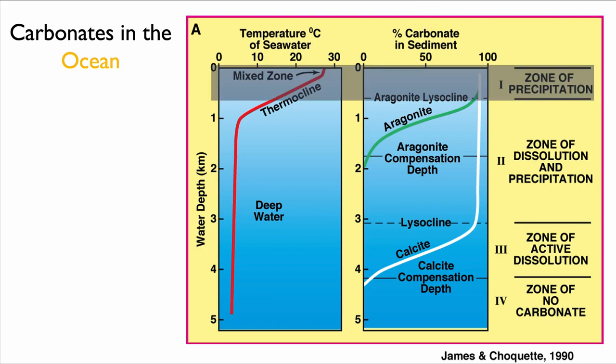The percent carbonate in the sediment changes with respect to water temperature and depth in the ocean. The first zone we recognize is just above the aragonite lysocline — the point at which the rate of dissolution of aragonite exceeds the rate of precipitation. Above this, Zone 1 is a zone of net precipitation of aragonitic cement, characteristic of tropical to subtropical warm zones.